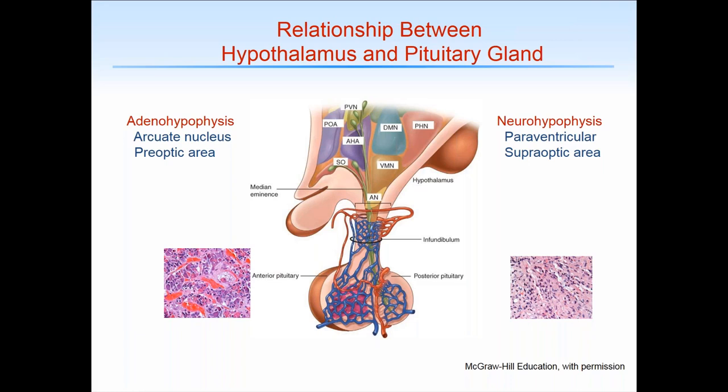This complex portal circulation also allows for a local feedback system to the hypothalamus, sometimes called a short feedback loop. There are many different hypothalamic nuclei, each of which is important for various pituitary functions.